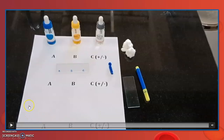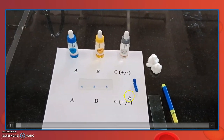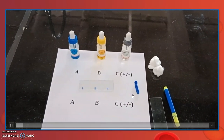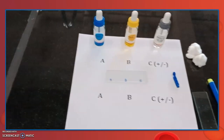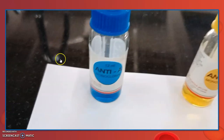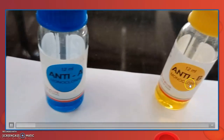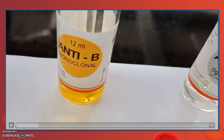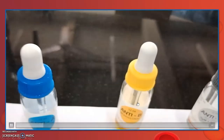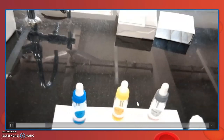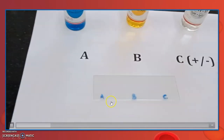Let us discuss the procedure behind this explanation. These are the requirements: you can check the ABD kit, glass slide, and needle. You must be aware of what the ABD kit looks like — it is transparent in colour. You can also check the glass slide, and mark points A, B, and C with a permanent marker.